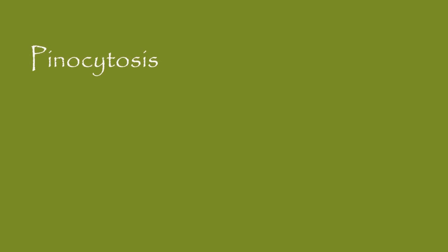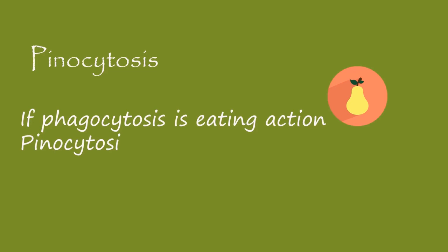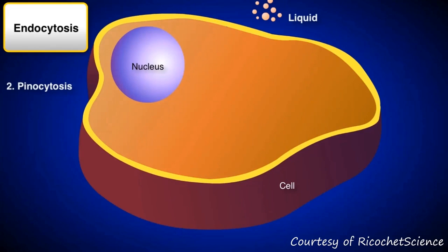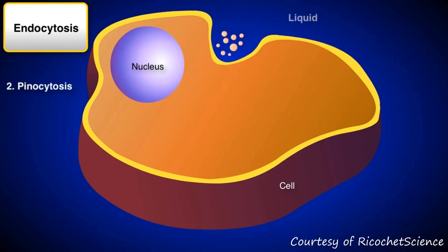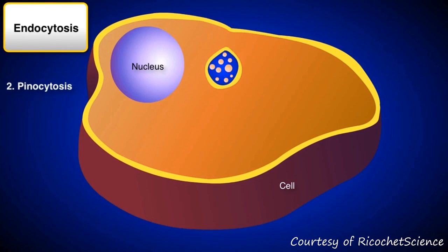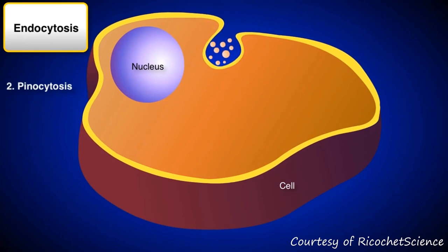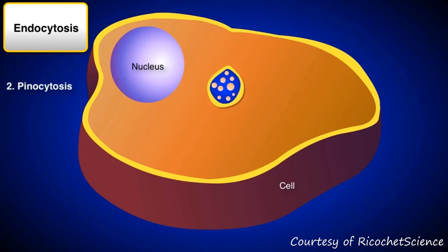The next one is pinocytosis. If phagocytosis is an eating action, pinocytosis on the other hand is drinking. Unlike phagocytosis, pinocytosis can only engulf small particles and extracellular fluids — that's why it is called drinking.